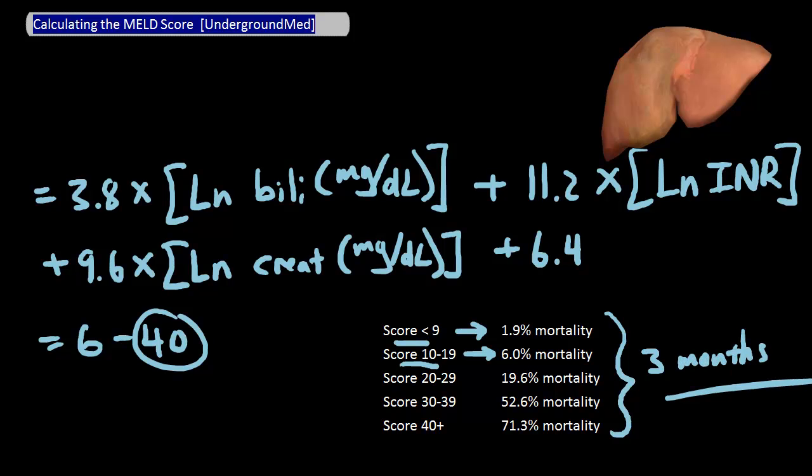Now, there are some situations in which the MELD score isn't completely accurate, and those conditions include hepatocellular carcinoma, hepatopulmonary syndrome, and some other systemic metabolic diseases associated with chronic liver disease. The biggest one to remember, however, is HCC, and additional MELD points might need to be added to correctly predict mortality.